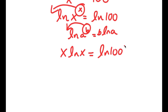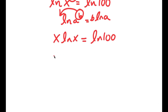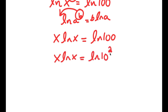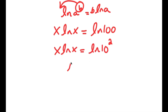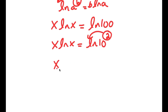Now, ln 100 is the same as ln of 10 squared, so I get x times ln x equals ln 10 squared. Applying the power rule again, I can move the 2 to the front, giving x times ln x equals 2 times ln 10.